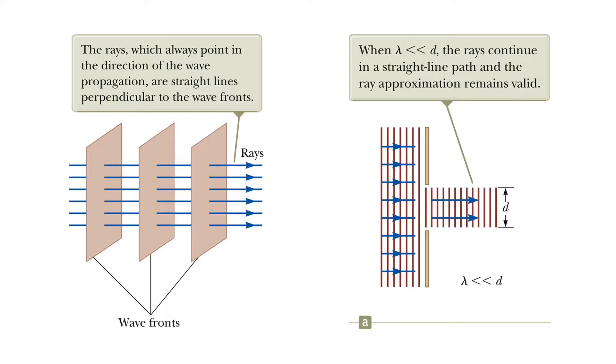As I said earlier, the ray theory is valid only when the wavelength is much smaller than the size of the objects. Here, for example, you see that the whole size of the plane is much greater than lambda, which is the wavelength. So the light rays continue propagation without any deflection.